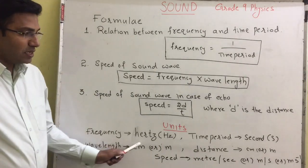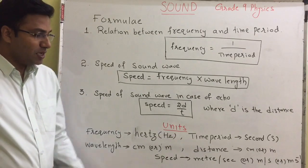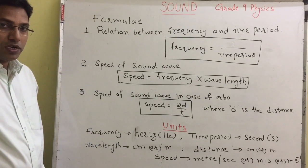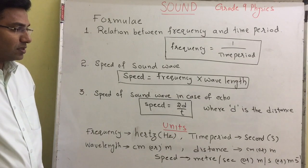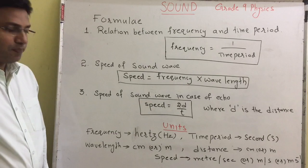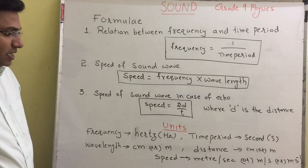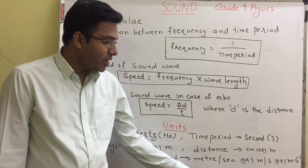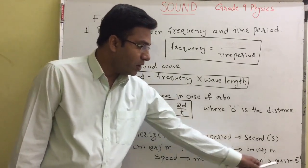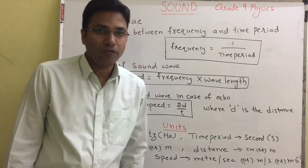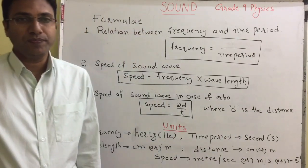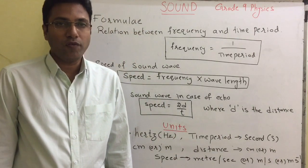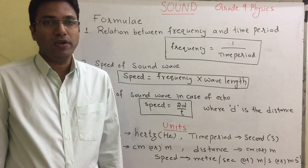Frequency is measured in hertz, time period in seconds, wavelength in centimeters or meters, distance in centimeters or meters, and speed in meters per second. You can also write m/s or ms to the power of minus 1. While solving problems, you have to take care of the units given.